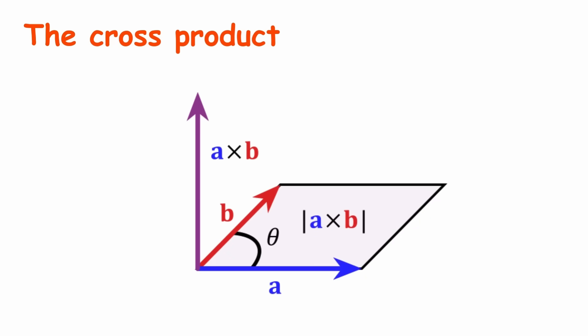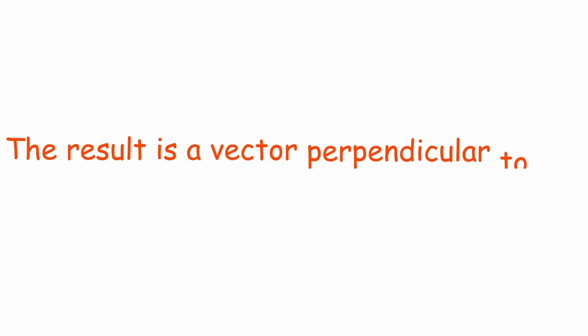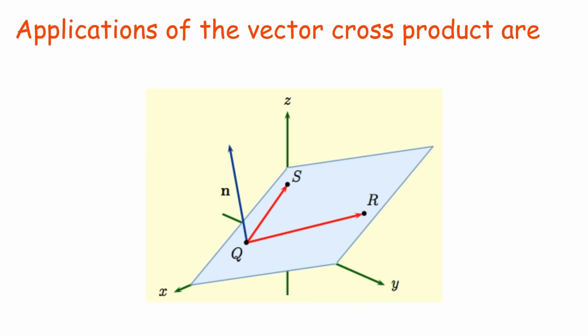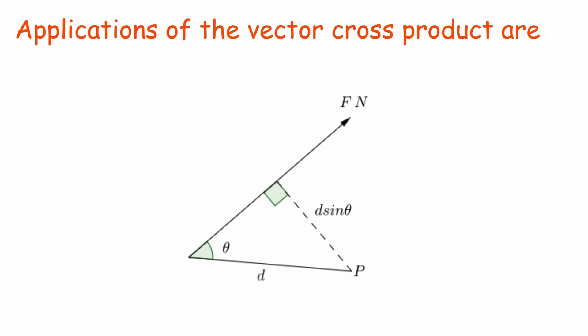The cross product is an operation between two vectors in three dimensions. The result is a vector perpendicular to the two original vectors. Applications of the vector cross product are: determine a normal vector to a plane, calculate the moment of a force in mechanics, find the area of the parallelogram defined by two vectors.